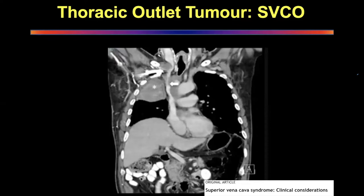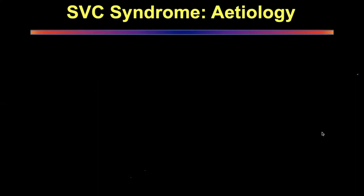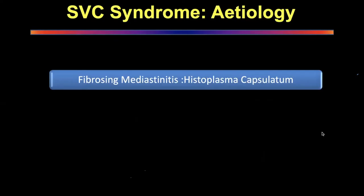Very often patients have no symptoms of the tumor and the first symptom that appears is SVC obstruction. It is really surprising how much the patient can tolerate before symptoms appear. This angiogram shows the obstruction very clearly below the brachiocephalic — the left brachiocephalic is coming in and the SVC is forming almost like a rat tail.